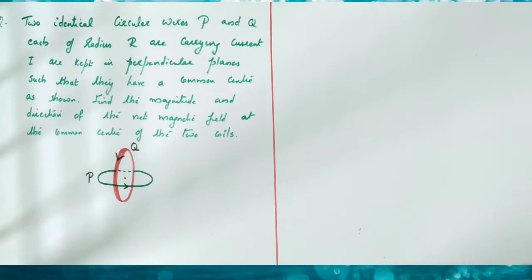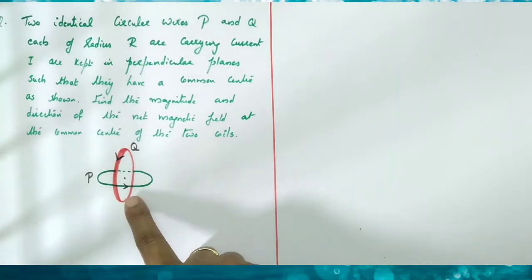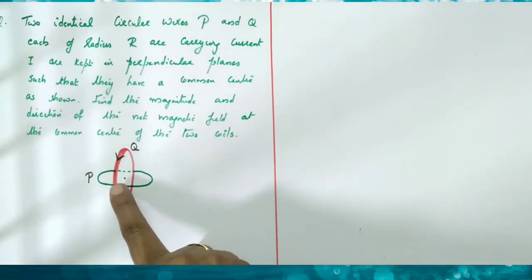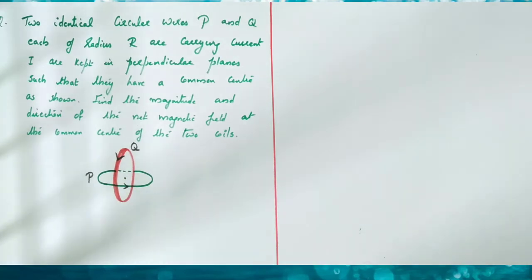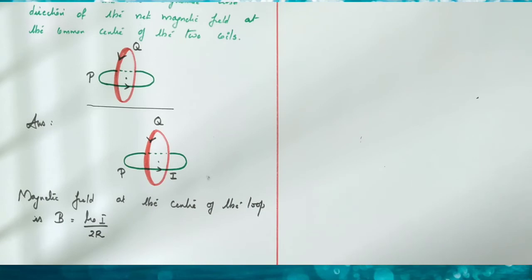Two identical circular wires P and Q, each of radius R and carrying current I, are kept in perpendicular planes such that they have a common center. Find the magnitude and direction of the net magnetic field at the common center of the two loops. The magnetic field at the center of a circular current loop is B equal to mu-0 I divided by 2R, and the magnitude is the same for both loops since current and radius are the same.